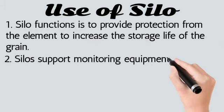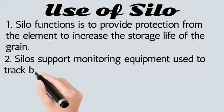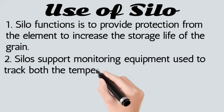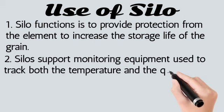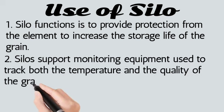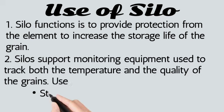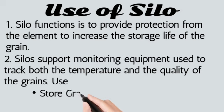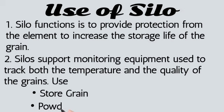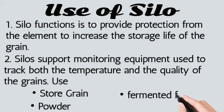Use of silo: Silo function is to provide protection from the elements to increase the storage life of the grain. Silos support monitoring equipment used in tracking and computing the quality of the grain. They are used to store grains, powders, fermented feed, and animal feed.